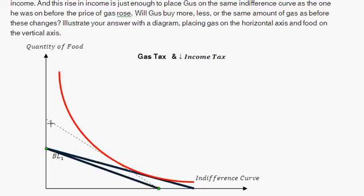So they can purchase a bit more gas. And then on this axis over here, on the quantity of food axis, a decrease in the income tax, making him more rich, allows him to purchase more food. Because he has more money, he's able to purchase more food, pushing out the budget constraint over here.